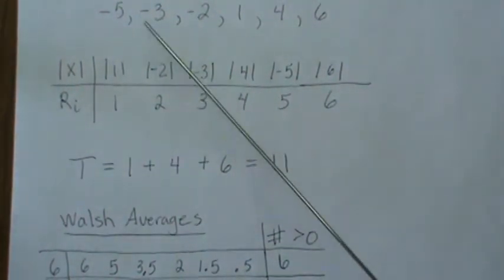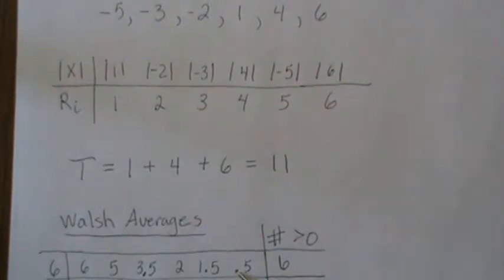Six and minus two is four divided by two. Six and minus three is three divided by two, which is 1.5. Six and minus five is one divided by two, which is 0.5.